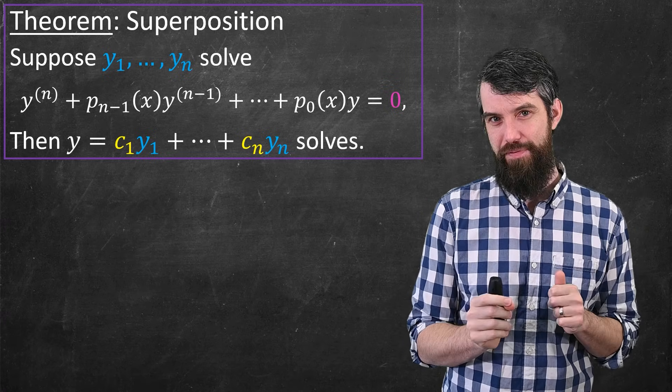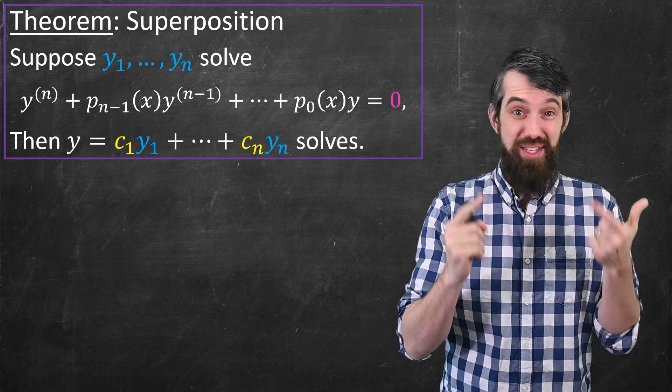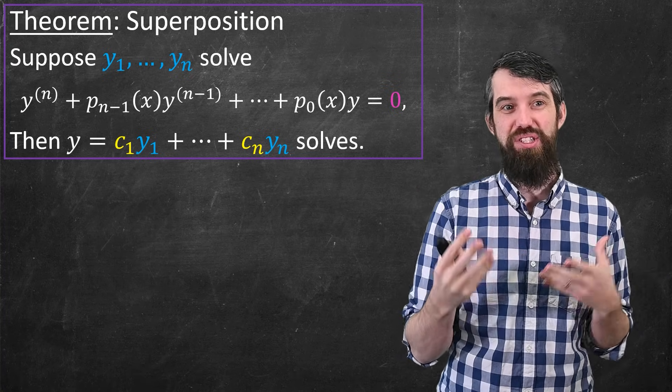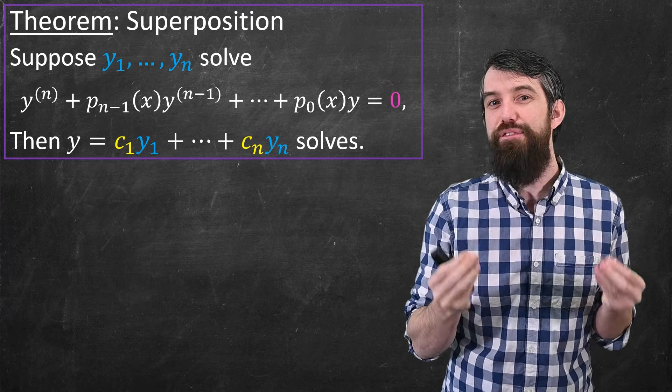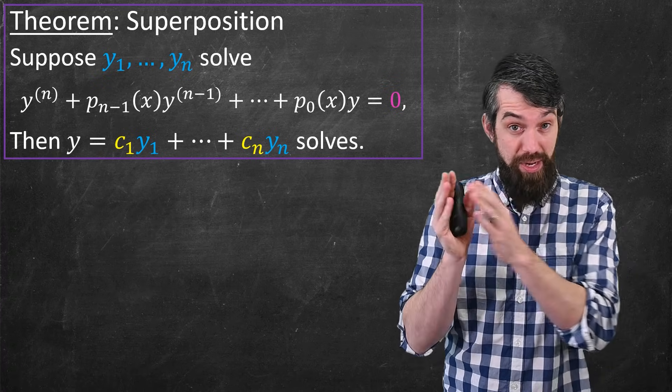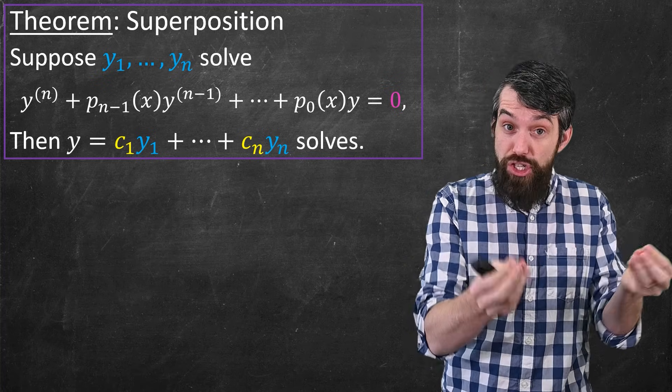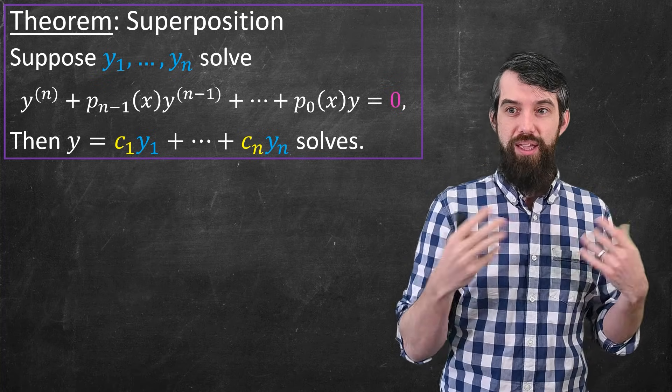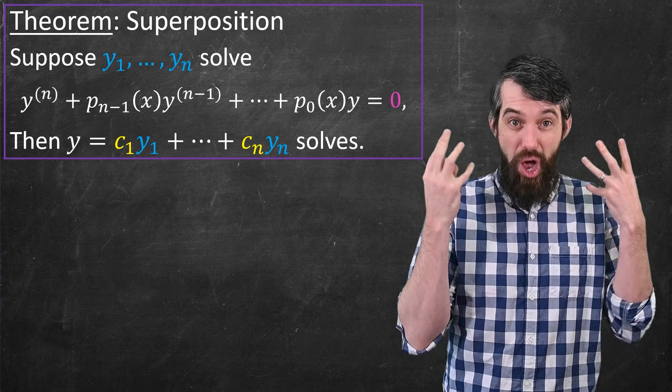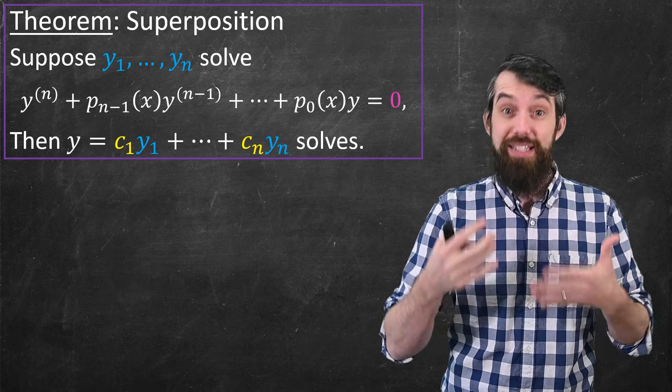But this still isn't quite enough. Because if you've gone and found n solutions, and then using this principle, really what you get is sort of n infinite families, like the linear combinations of those n, you still don't know that you've found them all. Maybe there's more. By the way, it's good to keep clear the difference between what we're talking about now and existence and uniqueness. For existence and uniqueness, you had initial conditions, so there was only one. Here I haven't specified initial conditions, so I'm trying to solve the general solution to the ODE without initial conditions. We could do initial conditions from this at the end.